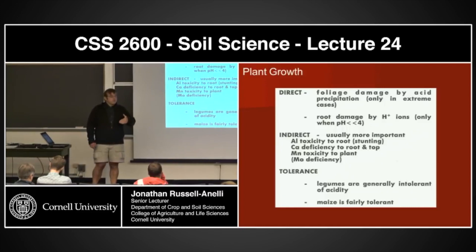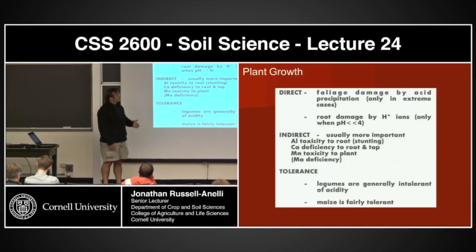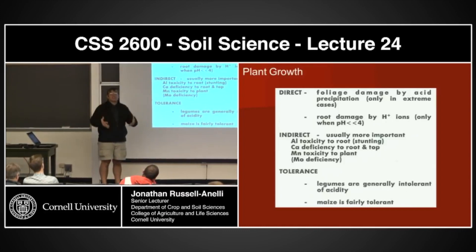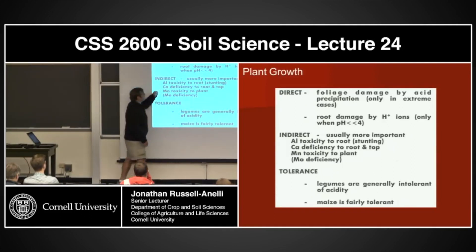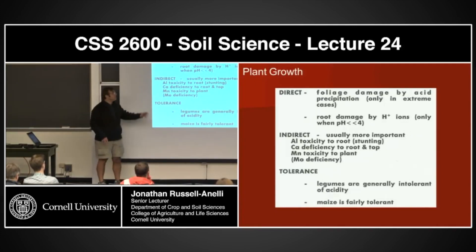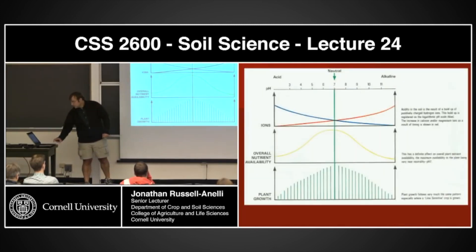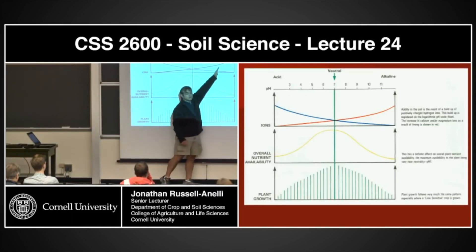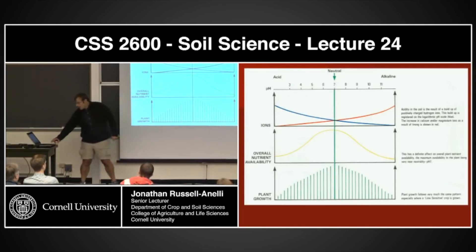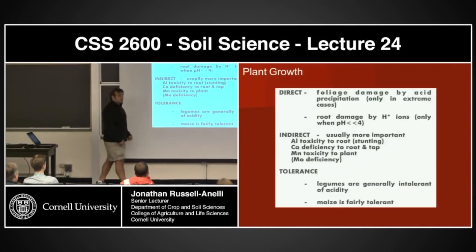Now, how does this affect plant growth? There can be some direct impacts — foliar damage when I have really high acidity. If I have acid rain or something like that, the acid is actually literally going to damage the plants. I will also have root damage at pHs lower than 4. Indirectly — and this is more important — because our pHs generally, most of our soils tend to be in the middle zone. So we're really not going to have a lot of direct impact of acidity on our plants, but we're going to get a lot of indirect acidity.